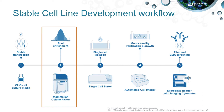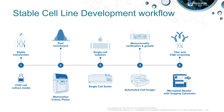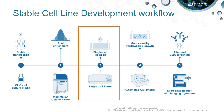The process of stable transfection, whether targeted or random, will generate a cell population with heterogeneous protein expression. Therefore, single cells must be isolated and cloned in order to ensure that the cell population is genetically identical, significantly reducing the heterogeneity of expression. Single cell isolation is the process of separating individual cells from a block of tissue or cell suspension for further analysis.